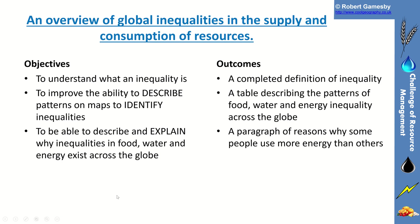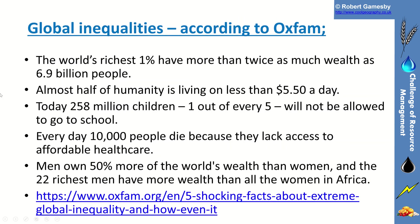I had a look on the Oxfam website, which is excellent. There are a few facts to think about: the world's richest 1% have more than twice as much wealth as 6.9 billion people. Almost half of the people on our planet live on less than $5.50 per day. Today, 268 million children — one in every five — will not be allowed to go to school.